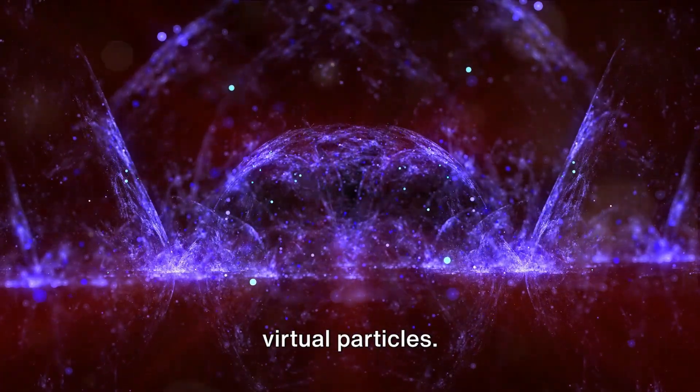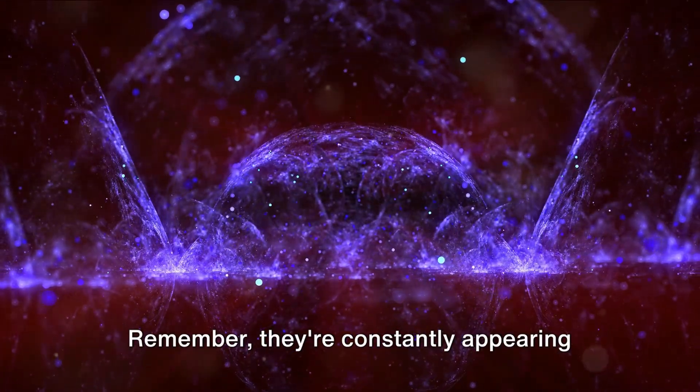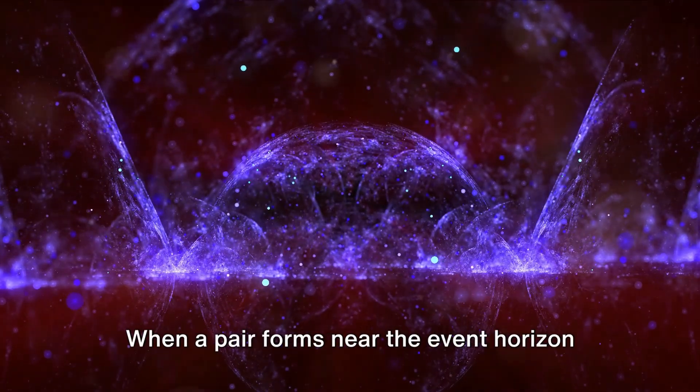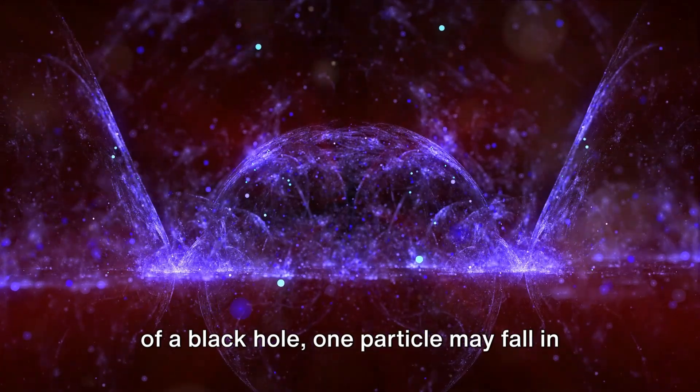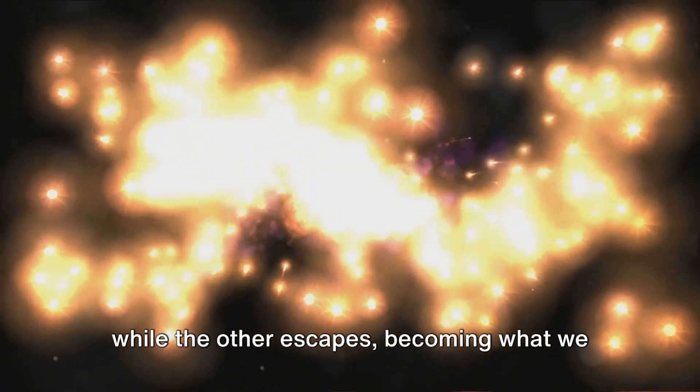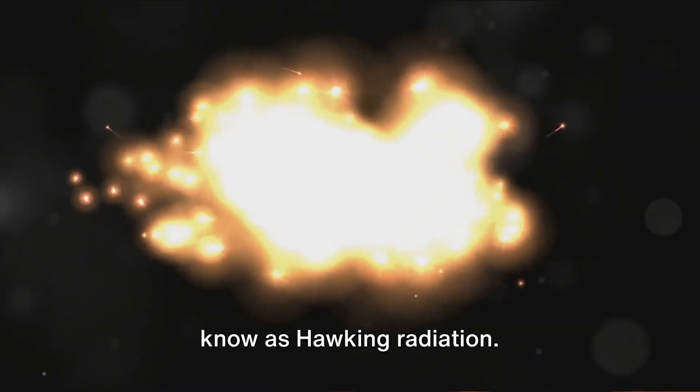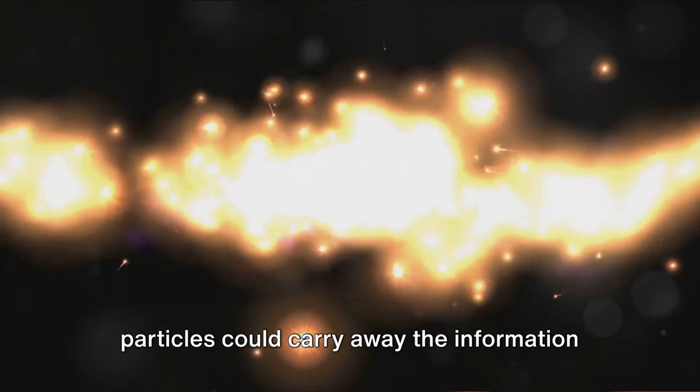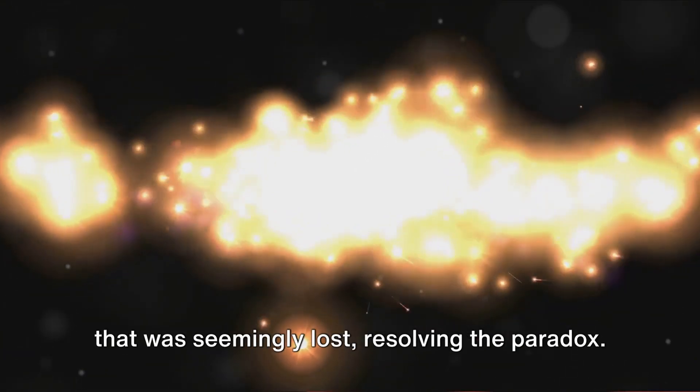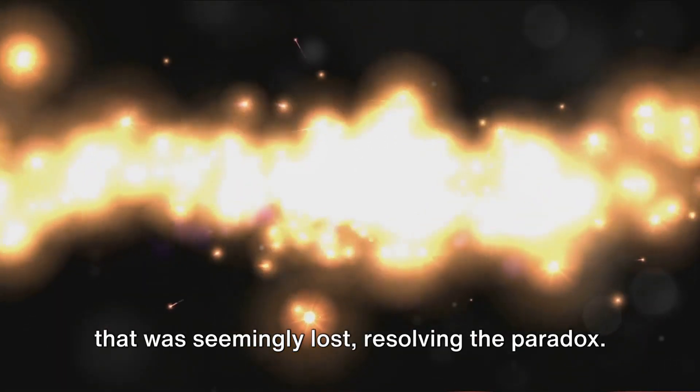Well, it's all about those virtual particles. Remember, they're constantly appearing and disappearing within the foam. When a pair forms near the event horizon of a black hole, one particle may fall in while the other escapes, becoming what we know as Hawking radiation. It's been suggested that these escaping particles could carry away the information that was seemingly lost, resolving the paradox.